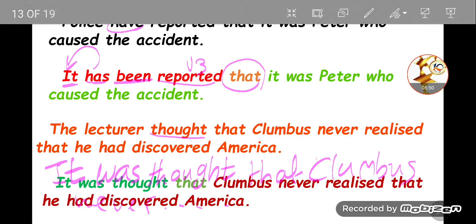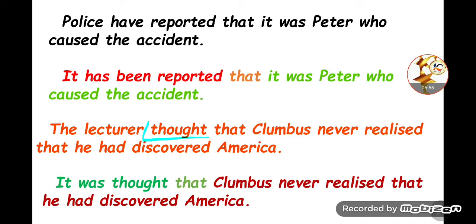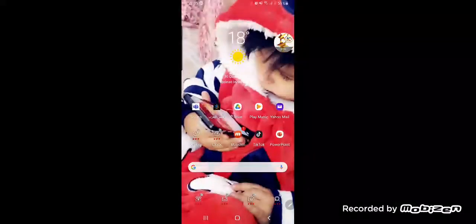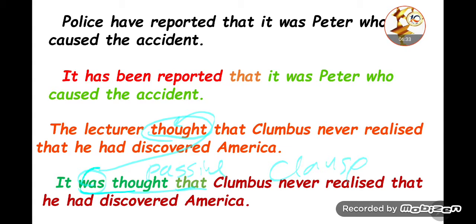Let's check if the answer is correct. We used 'it was' because the reporting verb 'thought' is past simple, so we use 'was'. If it were present, we'd use 'is'; if present perfect simple, we'd use 'has been' + verb three. Then 'that' and the second clause complete the sentence.